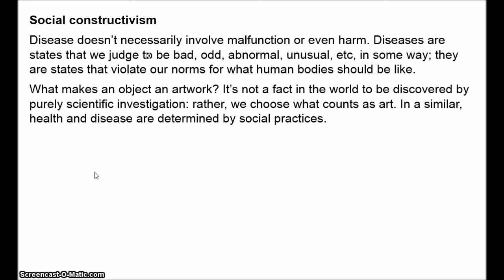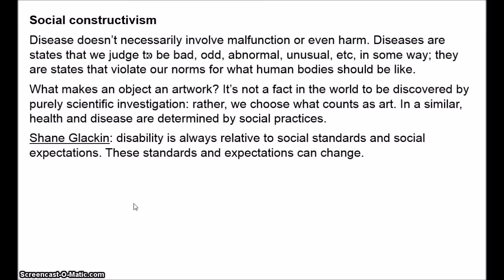One recent example of constructivism is in the article 'Tolerance and Illness' by Shane Glackin. Glackin talks about disability, noting that disability is always relative to social standards and social expectations. Why is the inability to walk a disability while the inability to fly isn't? Because the ability to walk is required in society, whereas nobody requires the ability to fly. But the requirements of society can change.